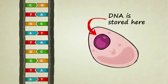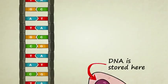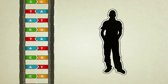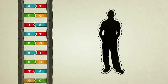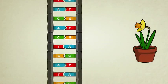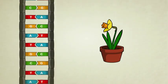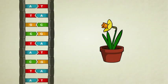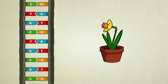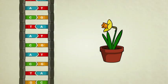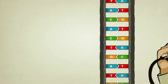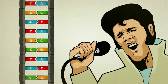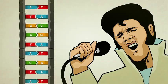Your DNA contains coded information on how to build you. The information in your DNA is different than that of, say, a daffodil's DNA, which is why you look and function differently than a daffodil. The information in your DNA is slightly different than that of Elvis Presley, which is one of many reasons you don't look or act quite like he did.